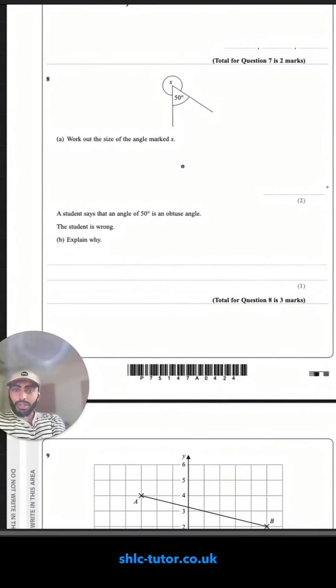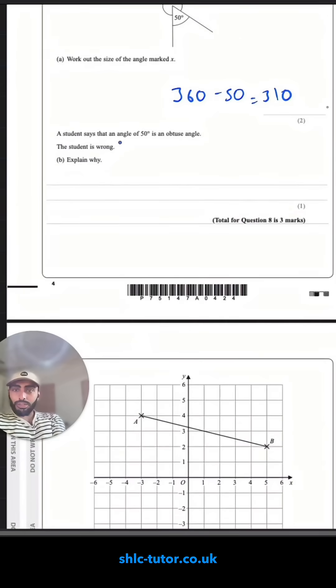Number eight, work out the size of the angle. This is angles around a point, which add up to 360. 360 take away 50. 36 take away five is 31, 310. A student says that the angle of 50 degrees is an obtuse. Angles less than 90 are acute.